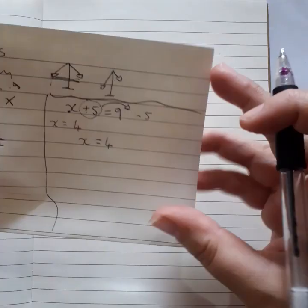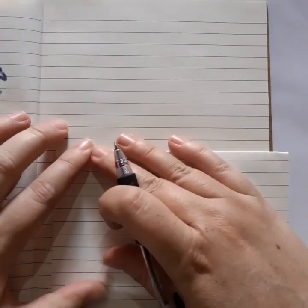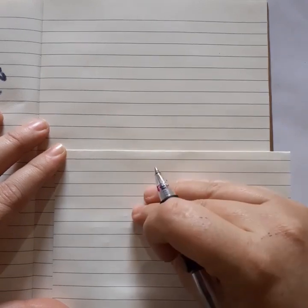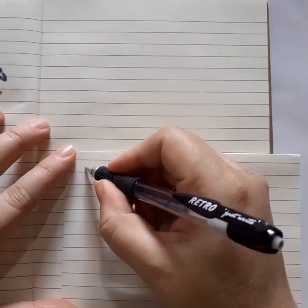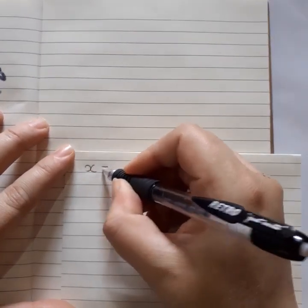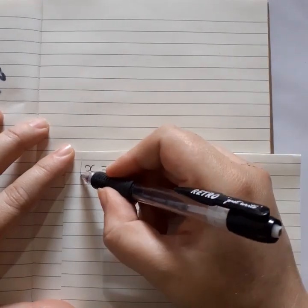All right, let's do some more examples. So what we need is we always need to get the x by itself. So that we can, our answer needs to be x equals. That is our answer going.